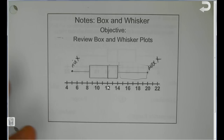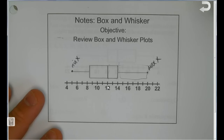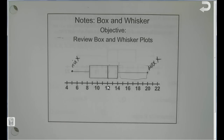To make a box and whisker plot, we have to find the values of the splits, and we call those quartiles. When we calculated one-variable stats, we looked at min, Q1, median, Q3, and max.